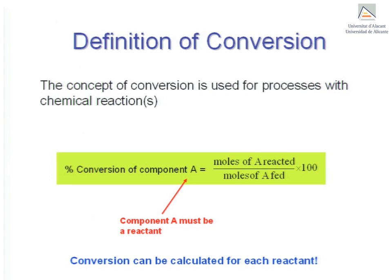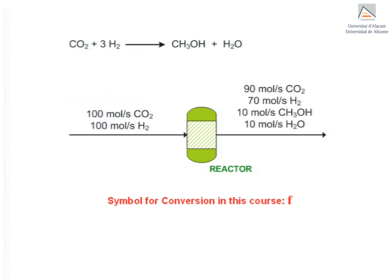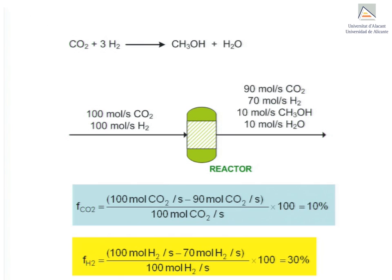Let's see an example. In this example there are two reactants; let's apply the concept of conversion to both of them. The symbol used here for conversion is F, though a different symbol might be used elsewhere. When we apply the equation to carbon dioxide, the amount reacting in moles is the difference between the amount supplied and the amount of unreacted CO2 that leaves the process. This difference comes to 10 moles per second.